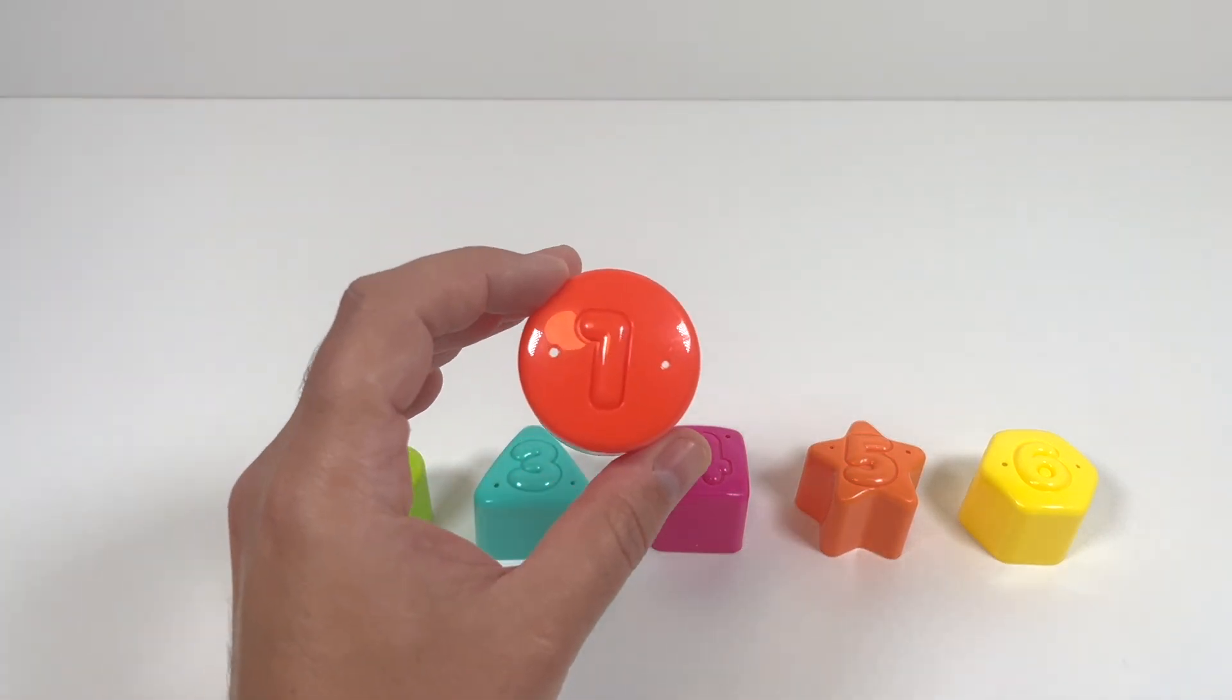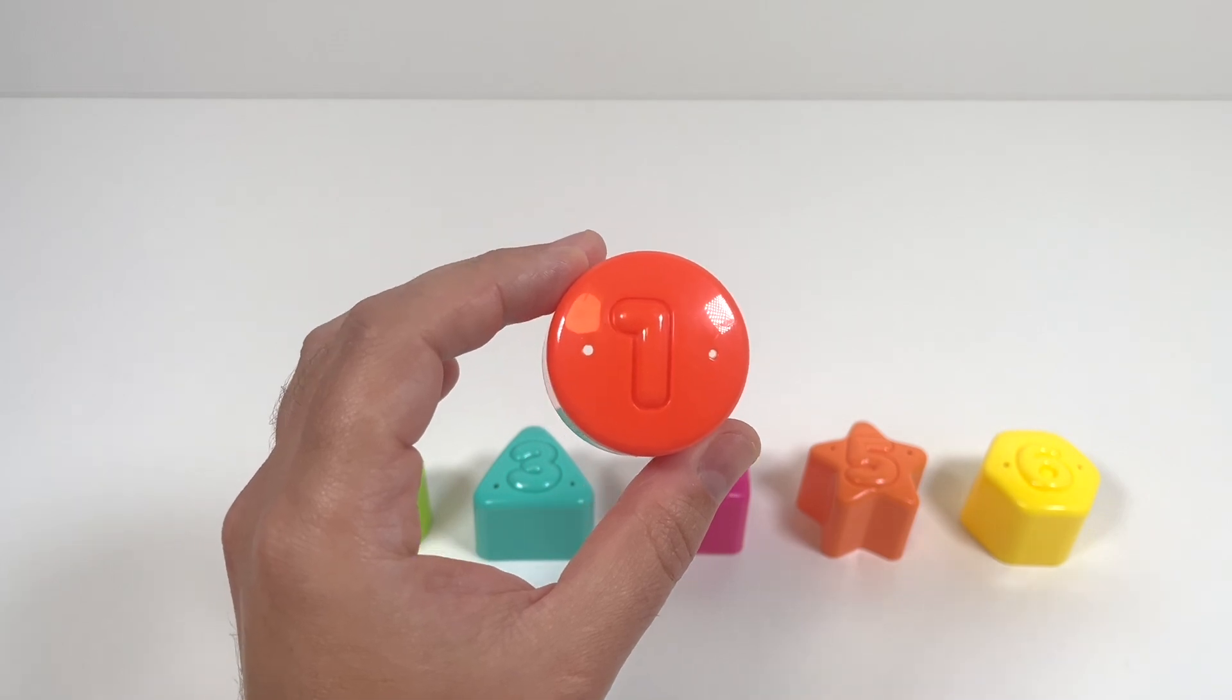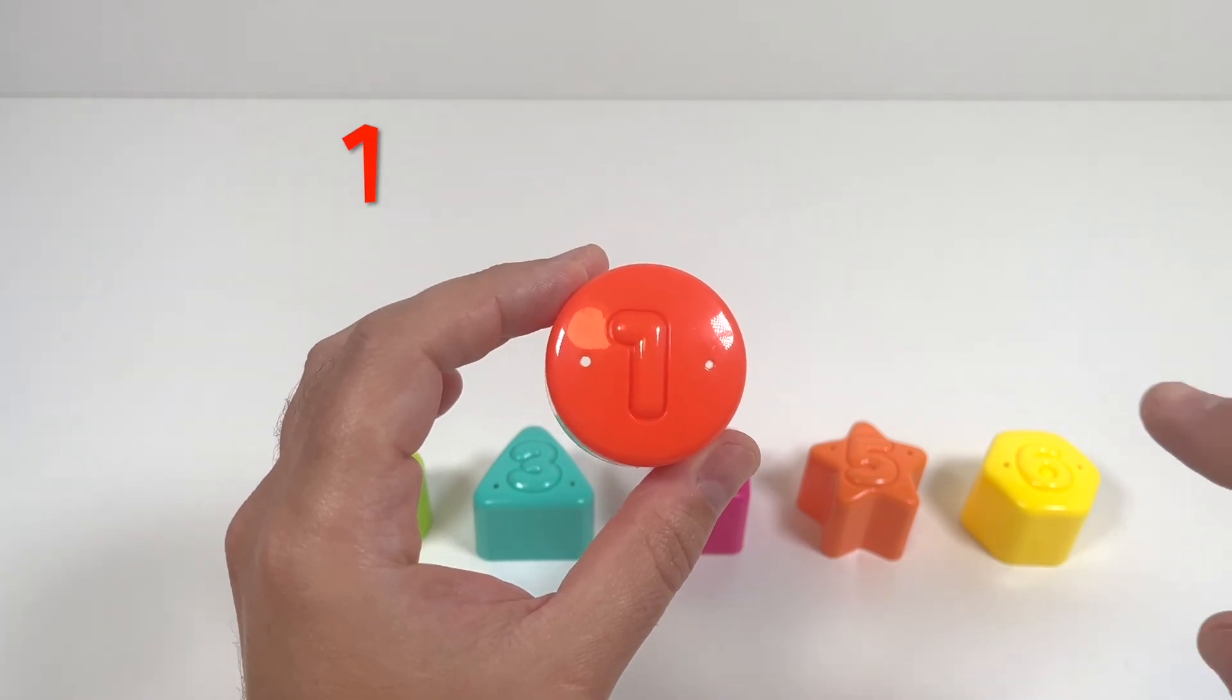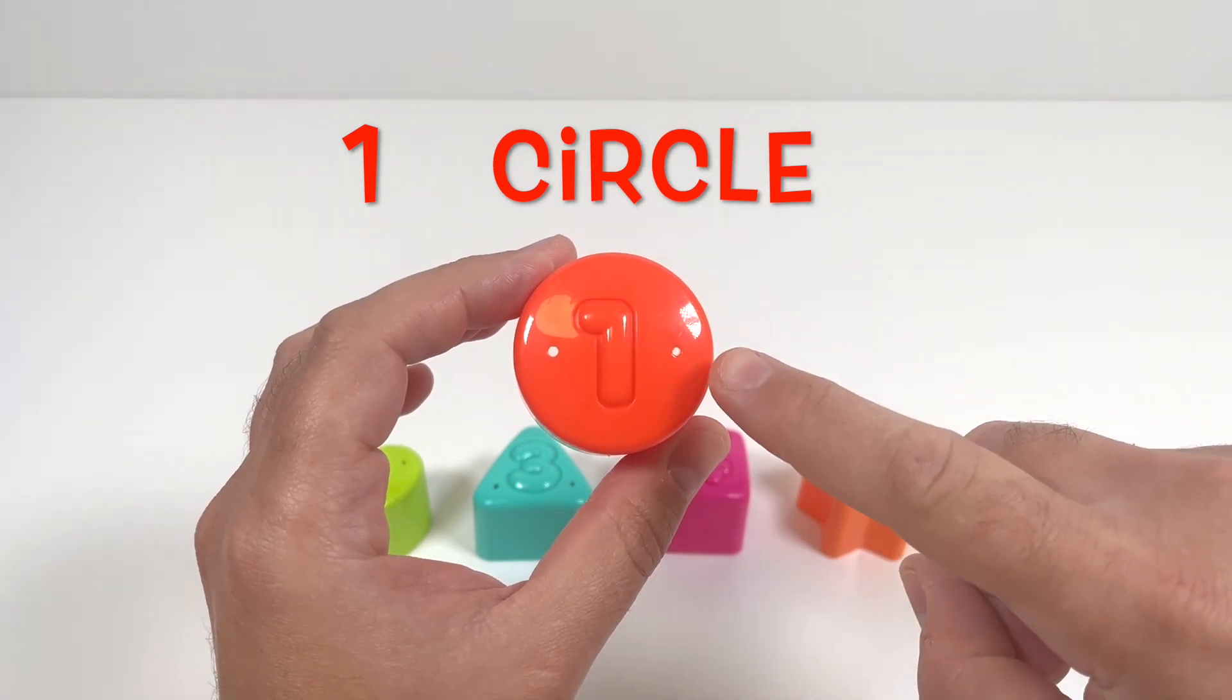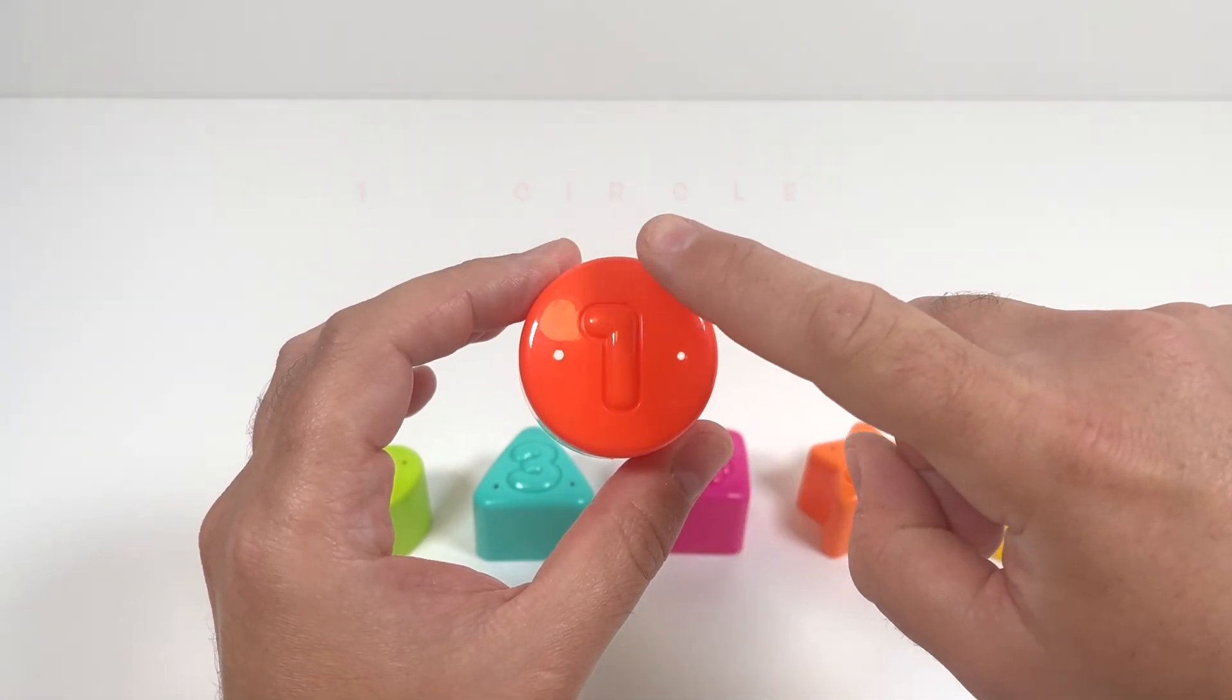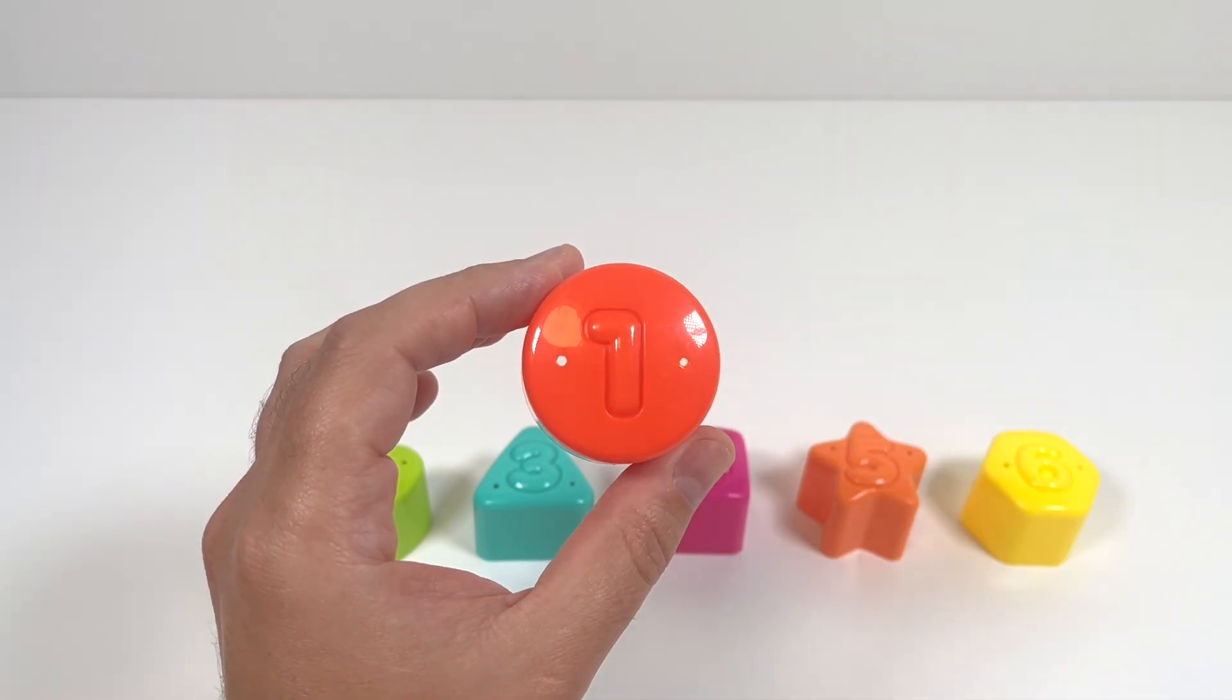We can start here with number 1. Number 1 is on a red circle. A circle has one side that goes all the way around. That's a red circle.